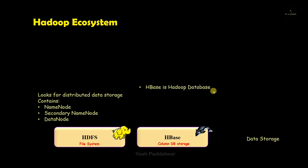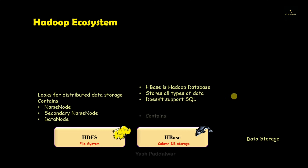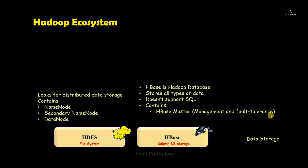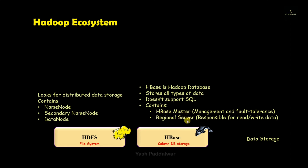Next we have the HBase component, which is a Hadoop database used for storing data of any type — structured, unstructured, or semi-structured. Since data can be of any type, it won't support the structured query language generally used for structured data. It contains two components: the HBase master, which manages the other components and handles fault tolerance, and the regional server, which is responsible for read-write operations. Whatever instructions are given by the HBase master, the regional server executes them.